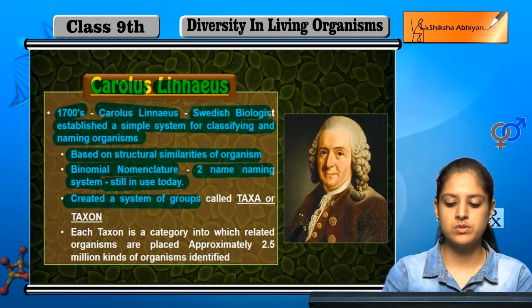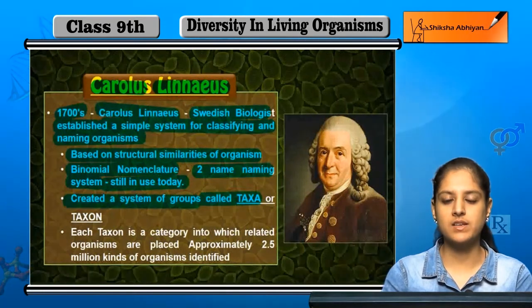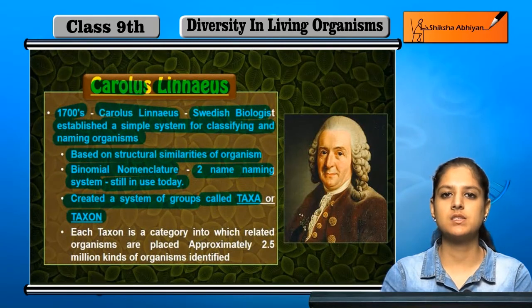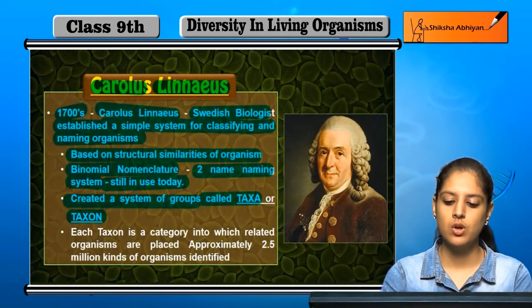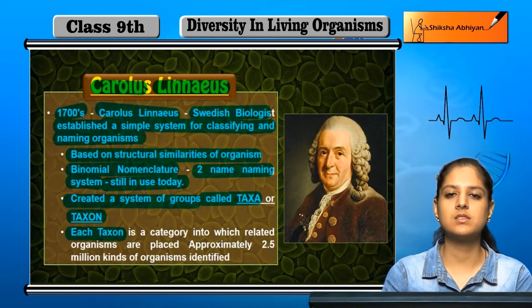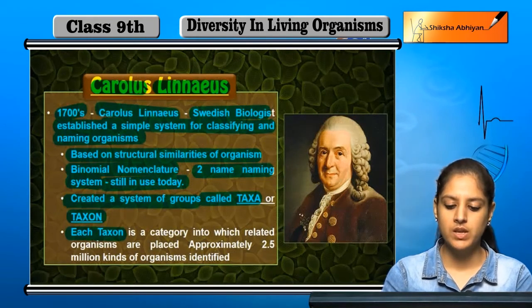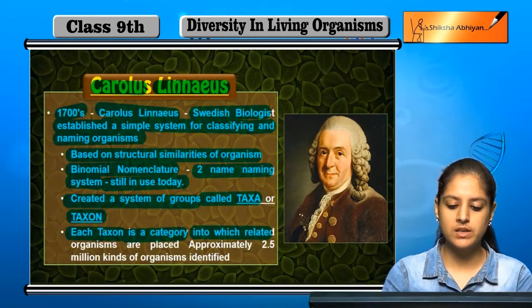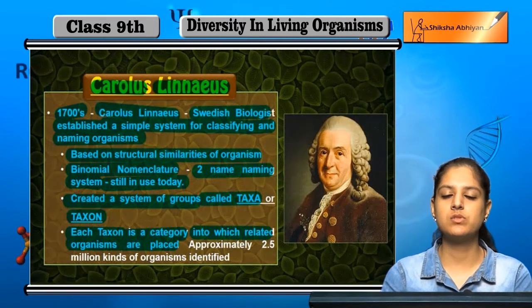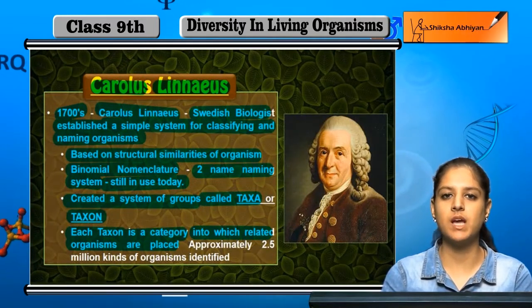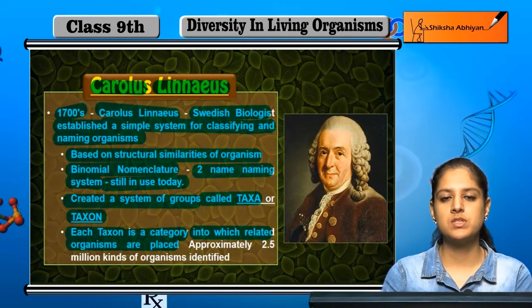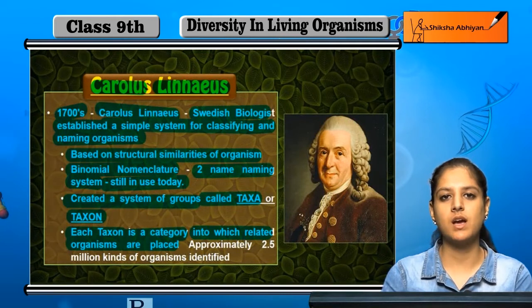He created a system of groups called taxa, or taxon. Each taxon is a category into which related organisms are placed — one category for similar or related organisms of the same type is one taxon.